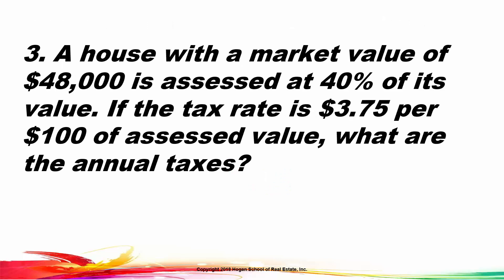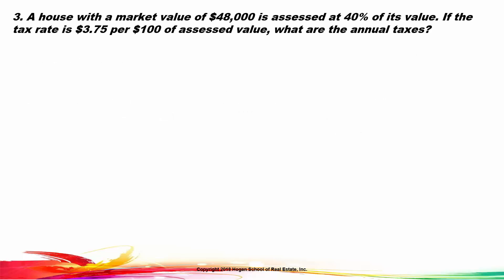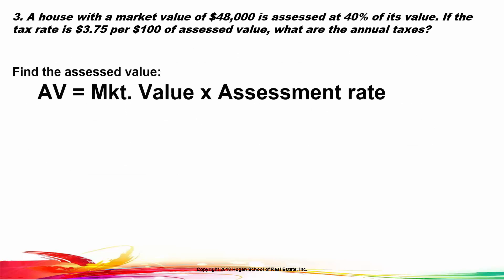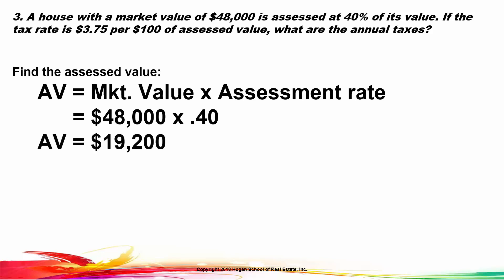Number three: a house with a market value of $48,000 is assessed at 40% of its value. If the tax rate is $375 per $100 of assessed value, what are the annual taxes? Remembering our tax formula, we first take the market value times the assessment rate: 48,000 times .40 (40%), giving an assessed value of $19,200.